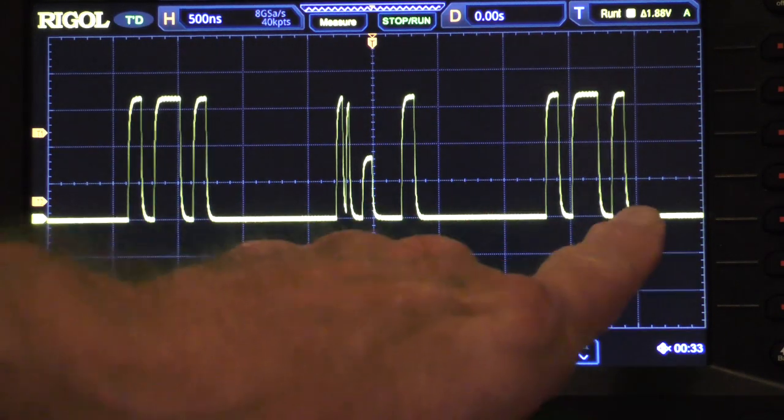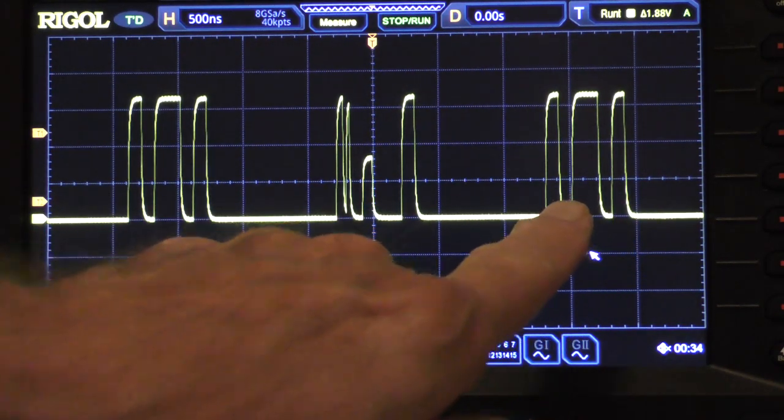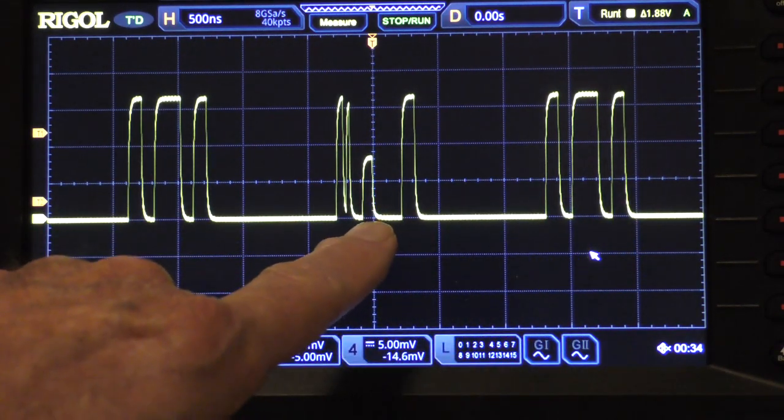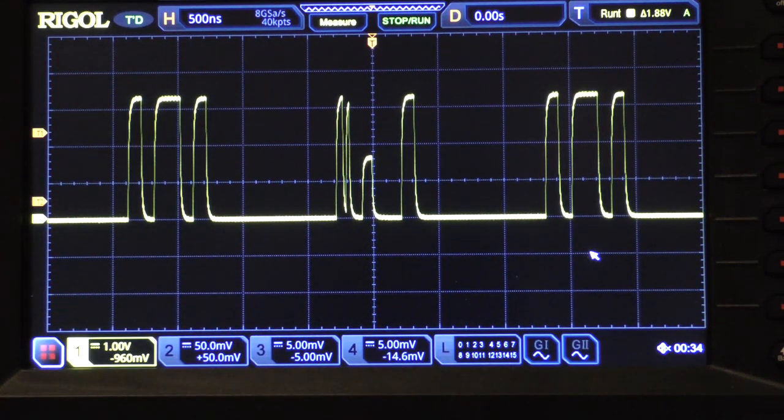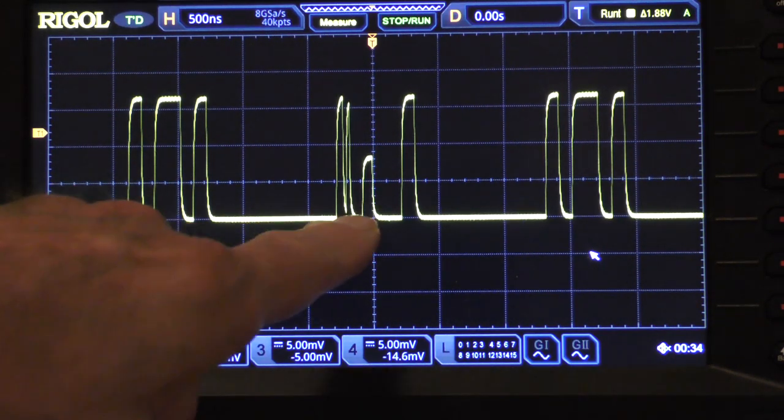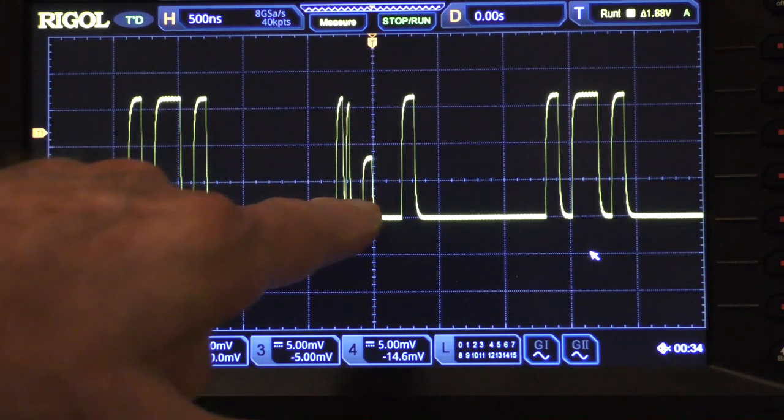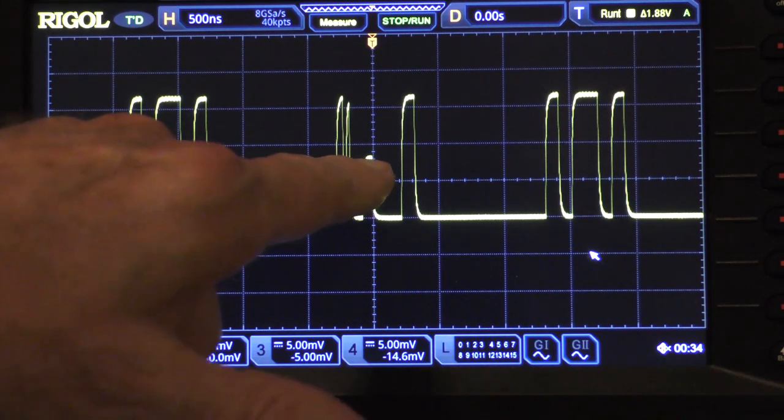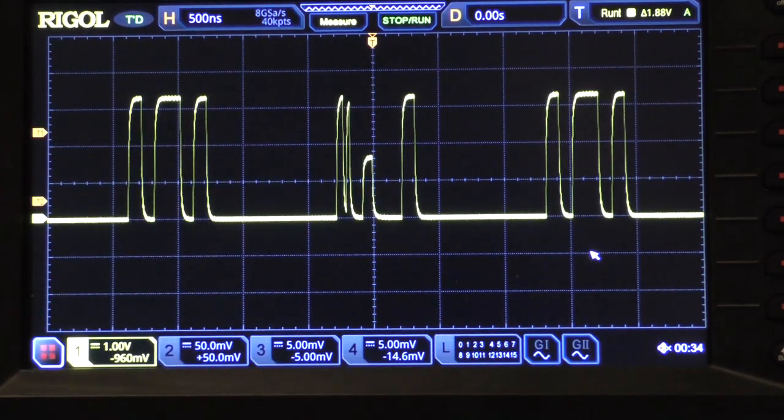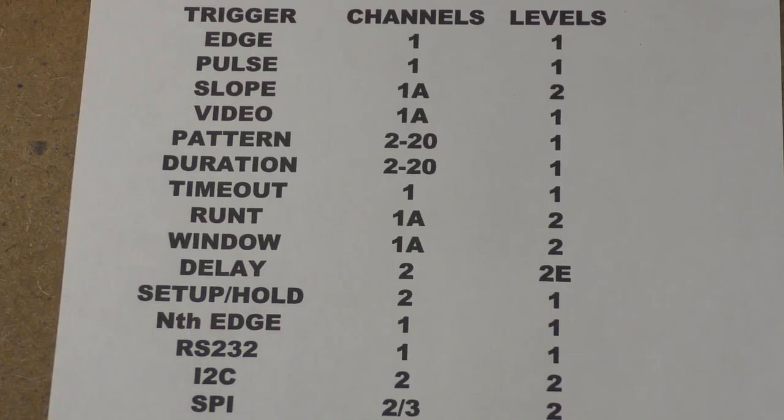In other words, this waveform and this waveform look pretty much the same, but this one is quite different. So how do you find that kind of thing? Well, as we'll find out in a little bit, we're going to go through a few more of the triggers of this Rigol MSO 5000 and we're particularly going to try to find that pulse.